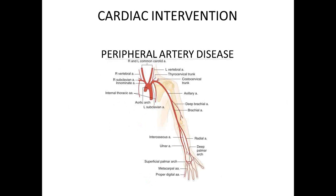The importance of the upper extremity anatomy is that we commonly cannulate the radial artery during cardiac catheterization and coronary intervention. Also importantly, the internal mammary or internal thoracic artery and the vertebral artery come off the subclavian.